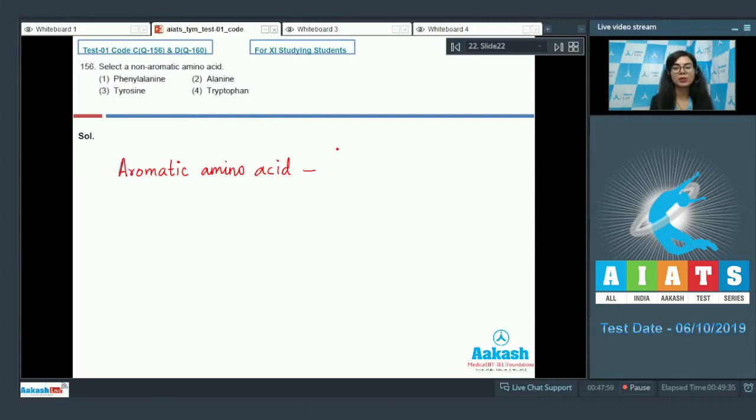Aromatic amino acids possess a cyclic structure with a side chain which bears a carboxylic and an amino group. The examples of aromatic amino acids are tyrosine, tryptophan, and phenylalanine. Looking at the options, this is aromatic, this is also aromatic, and tryptophan is also aromatic. Whereas alanine is a neutral amino acid.